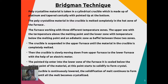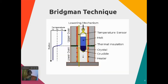When the crucible slowly moves down from the upper furnace to the lower furnace using an electric motor, the pointed tip enters the lower zone first. At the tip, the material is cooled below its melting point and begins to solidify, forming a crystal. As the crucible continues to lower, solidification continues until all the material becomes crystallized.